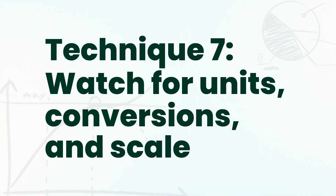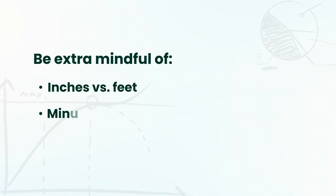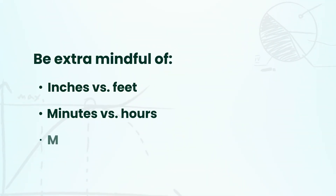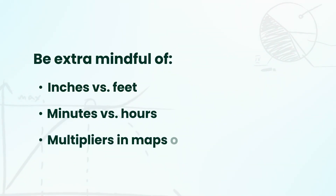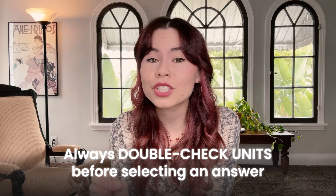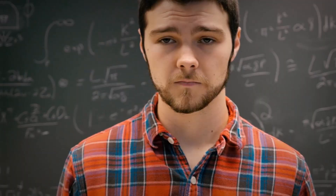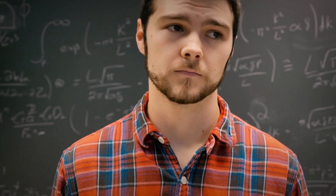Technique number seven: watch for units, conversions, and scale. The SAT loves to test your attention to detail. Be extra mindful of different units like inches versus feet, minutes versus hours, and multipliers in maps or scale drawings. Always double-check your units before selecting an answer — one missed label can cost you an easy point.